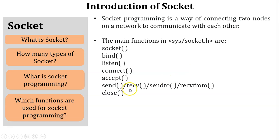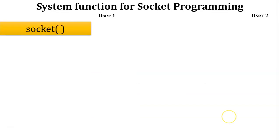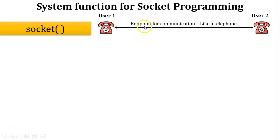Now let's understand all the system functions using a telephone analogy. Assume client equals user 1 and server equals user 2, since socket programming is used in client-server architecture. The first function is socket — a socket is an endpoint of communication. Just as a telephone is installed at user 1's and user 2's site, a socket is the endpoint for communication, like a telephone.